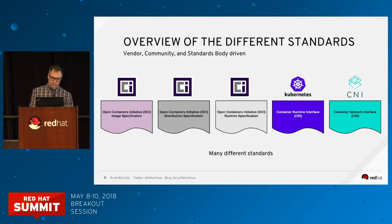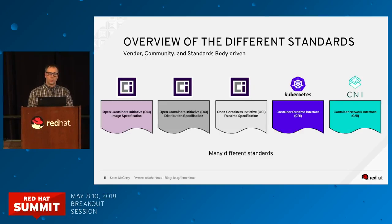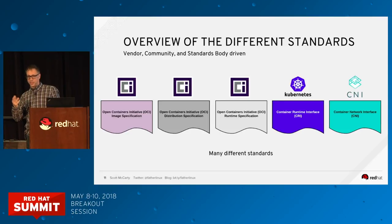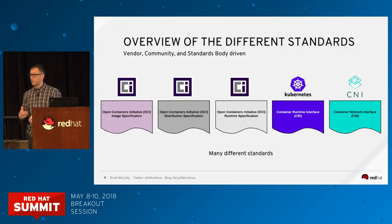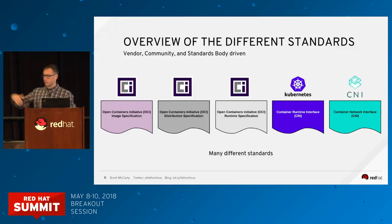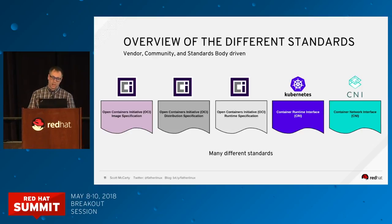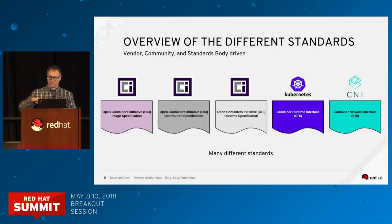What are the container standards to worry about for production containers? There are now three OCI specifications. The distribution specification is very new. There's a runtime spec that governs how to run containers on a host, an image spec that defines how to save it as an image, and the distribution spec that defines how to move images between registry servers. Now you're protected if you build OCI-compliant images—you can push into an Amazon registry, an Azure registry, a Red Hat-provided registry, Quay.io, or any competitor's registry. On the runtime side, CRI and CNI are interesting standards in the Kubernetes world, but the OCI specs are the ones we care about for this talk.